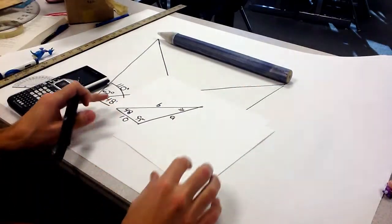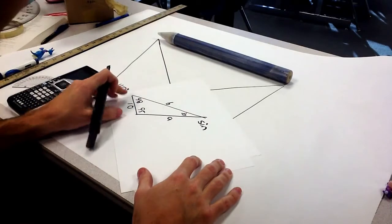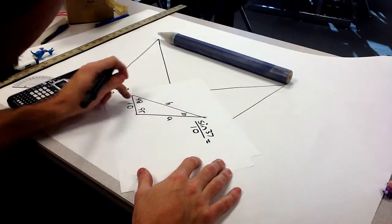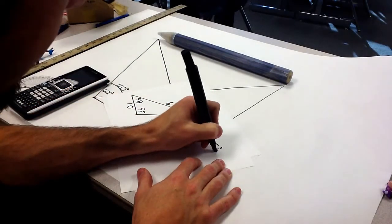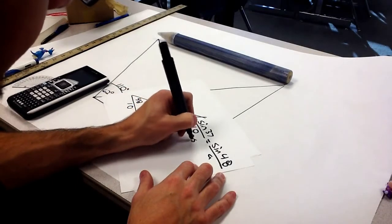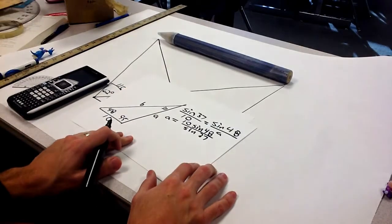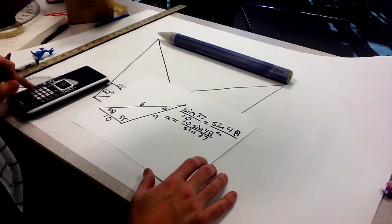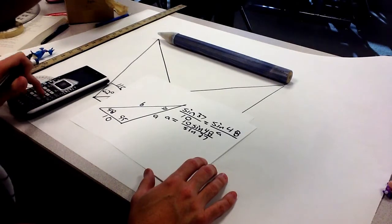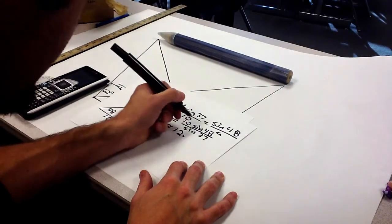So, we can use law of sines here to help us find A and B. So, sine of 37 over 10 is equal to sine of 48 over A. And this becomes that A is equal to, by cross product, 10 times sine of 48 over sine of 37. In our calculator, we get that A is approximately 12.3.